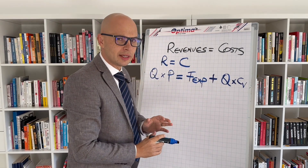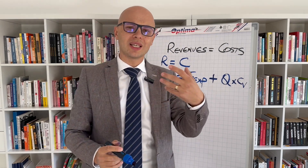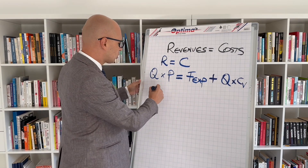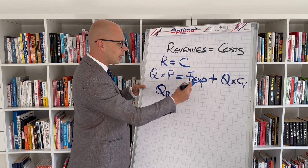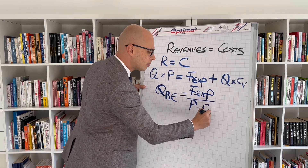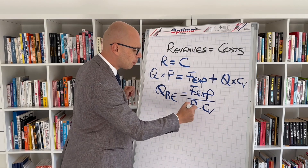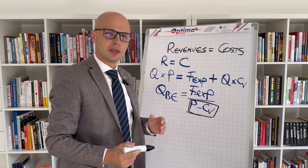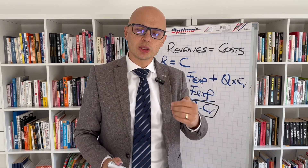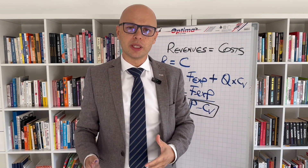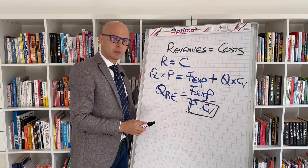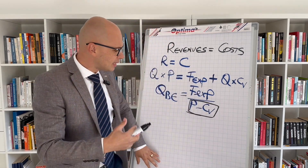Now we have revenue on one side and cost on the other side, and the question is: how much do I need to sell to reach breakeven? To find that, I calculate the quantity at breakeven. The formula is: fixed expenses divided by the price minus the variable unit cost (CV). The denominator — price minus CV — is the contribution margin, which is the difference between the price and the cost per unit, essentially my profit per unit. So how many times do I need to multiply that to cover my fixed expenses?